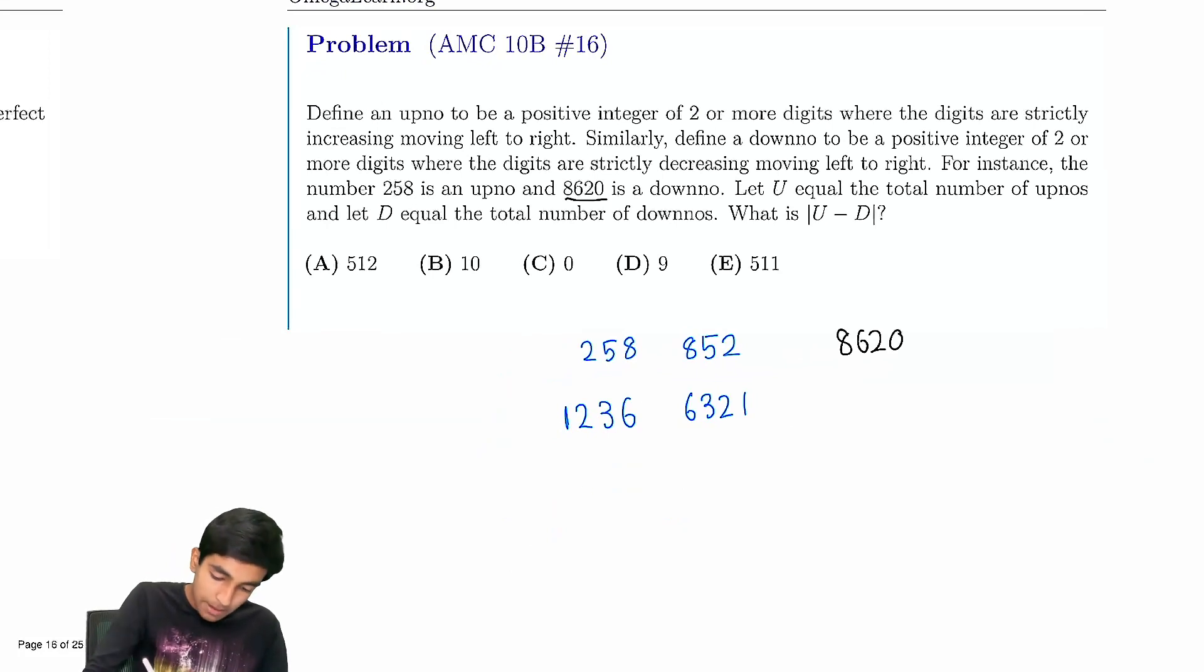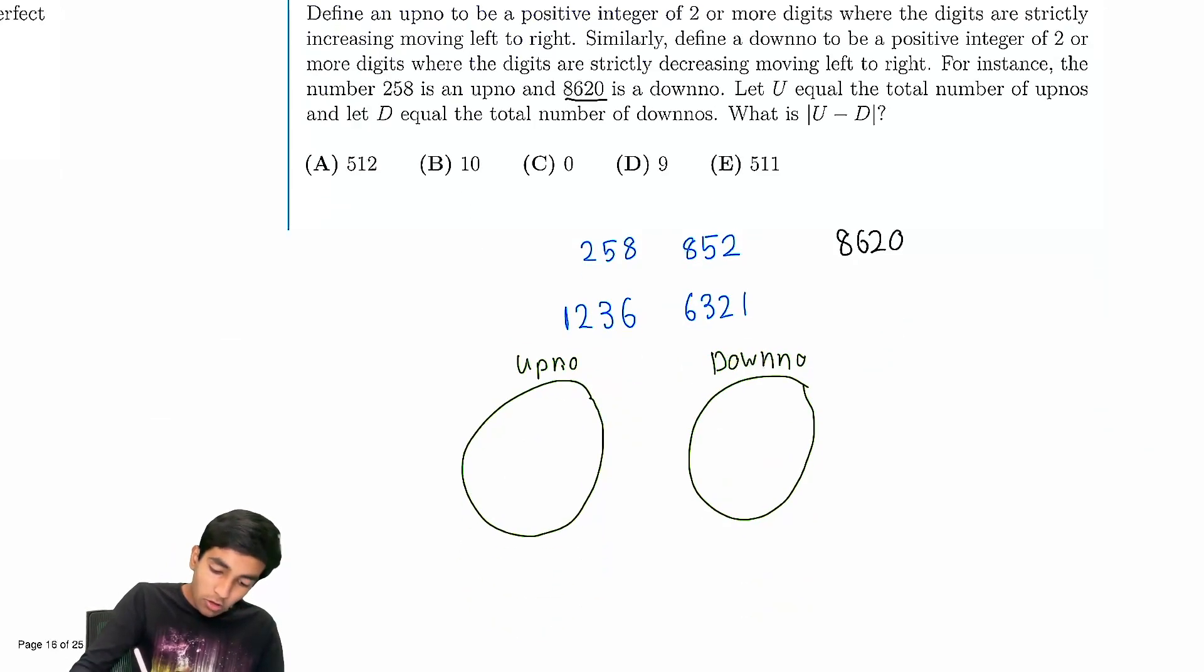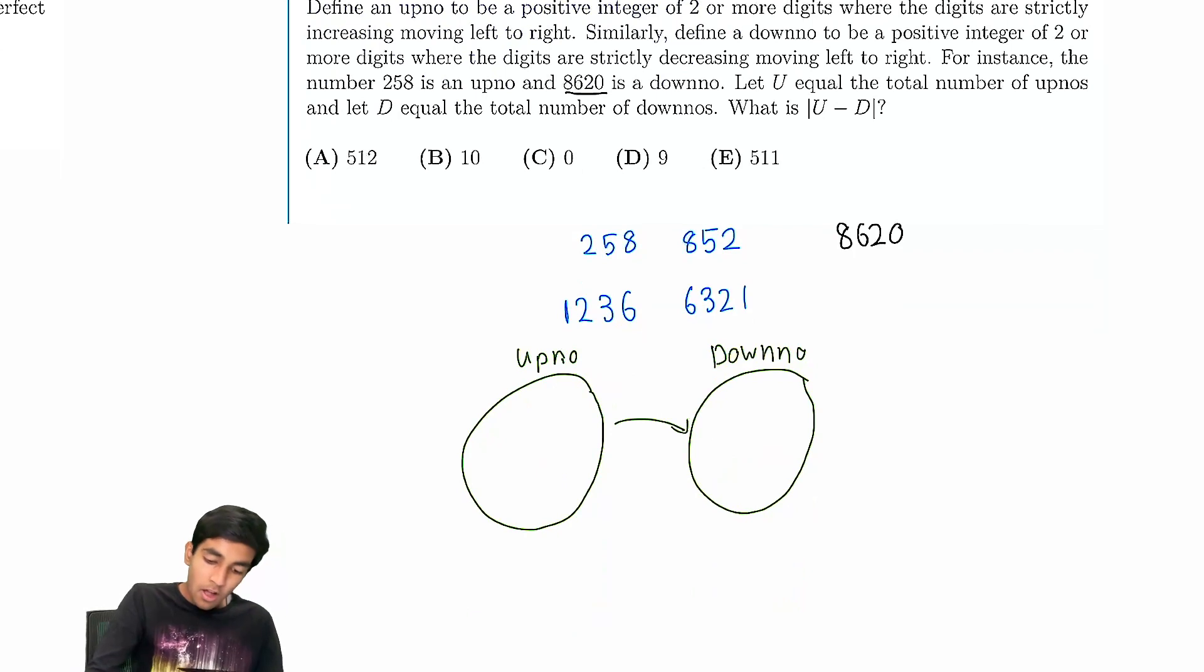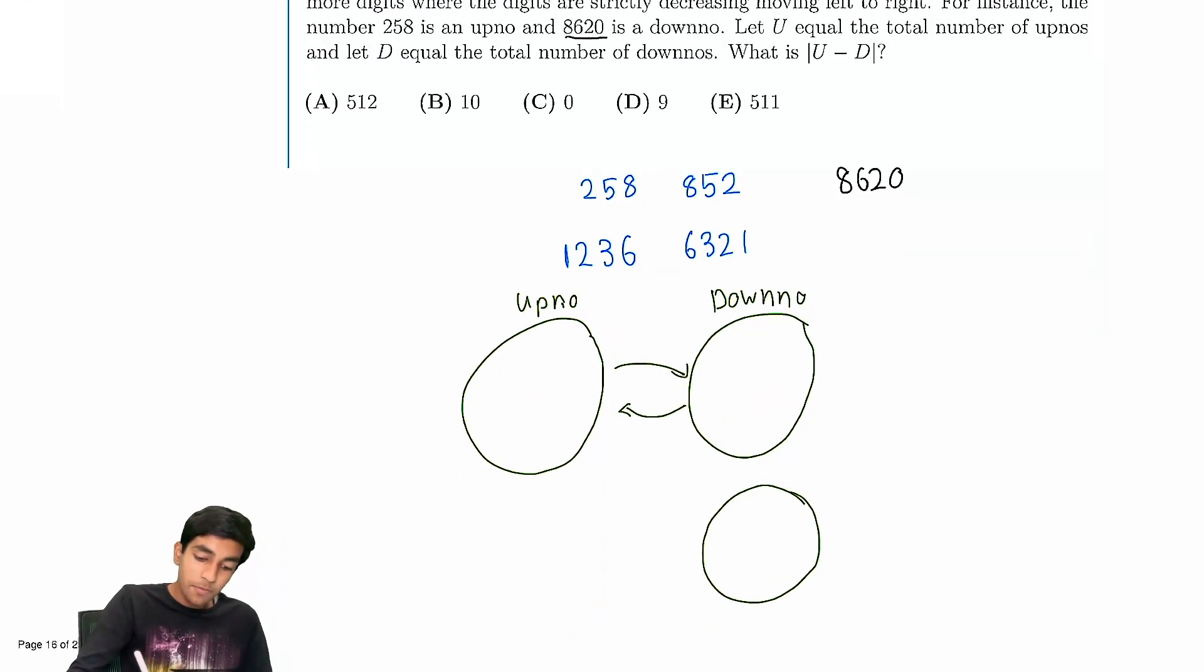So let me draw like a picture here. We have an upno and then we have some downnos. We can always reverse the digits and go from one to another, but we also have these downnos which you can't go to an upno from by reversing the digits.